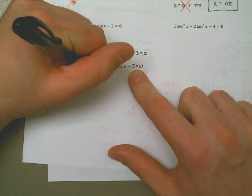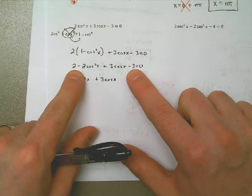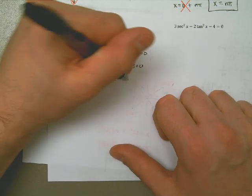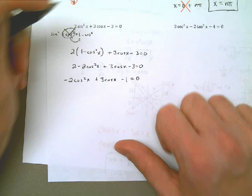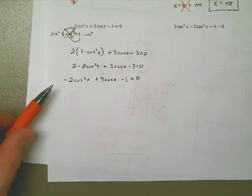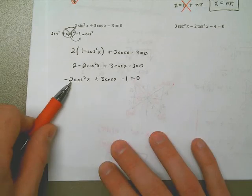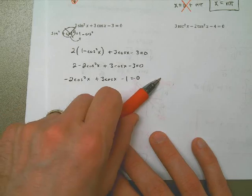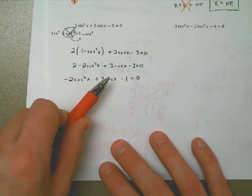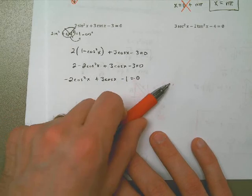I'm left with negative 2 cosine squared of x plus 3 cosine of x. 2 minus 3 is negative 1, equal to 0. Because I like the first term to be positive, I can either move everything on the left over to the right, or I can change the signs — making the first term positive, the second negative, and the third positive.